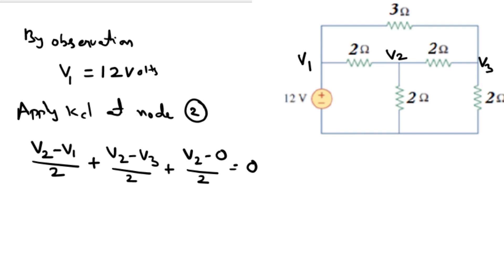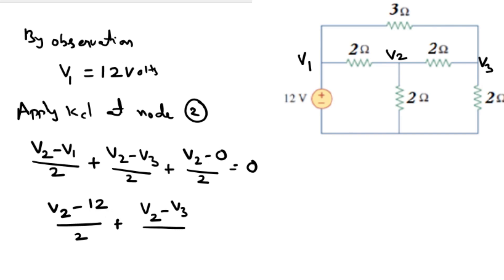The algebraic sum of currents: the first term is V2 minus V1 by 2 (the 2 ohm resistor), the second is V2 minus V3 by 2, and the last is V2 minus 0 by 2, equals 0. Substituting V1 = 12: V2 minus 12 by 2, plus V2 minus V3 by 2, plus V2 by 2, equals 0.